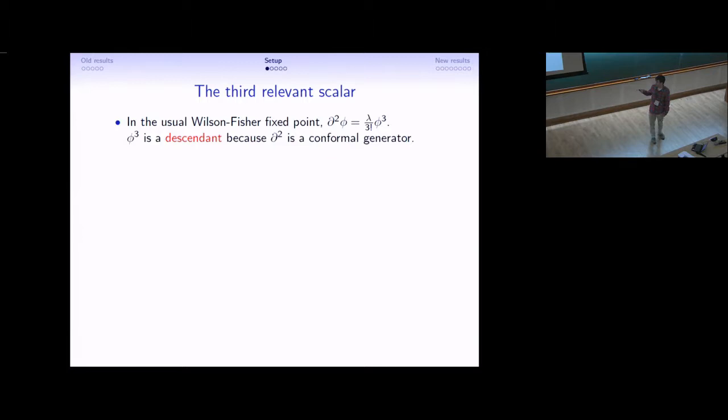Phi cubed in the usual Wilson-Fisher fixed point is a descendant of phi because of this equation of motion. If we write the analogous equation of motion for the non-local action, we find that it fixes the dimension of phi cubed, so we have another non-renormalization theorem. But it doesn't put it in any multiplet other than its own, so we have to regard phi cubed as an independent primary still.